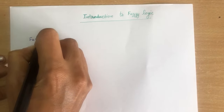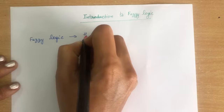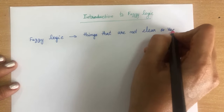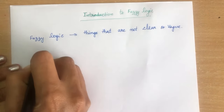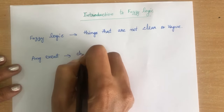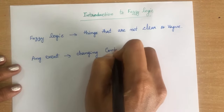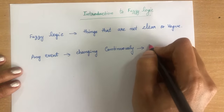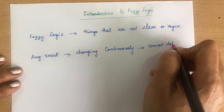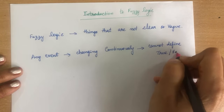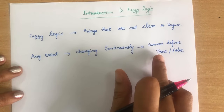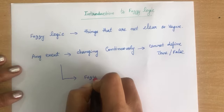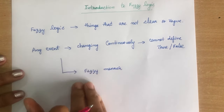Fuzzy means fuzziness. Fuzzy logic refers to things that are not clear or vague. If any event or function is changing continuously, we cannot define whether it is true or false. We cannot come to a conclusion whether it is true or false. Such problems we can solve using fuzzy logic.